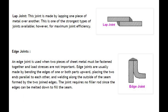Edge joints are usually made by bending the edges of one or both parts upward, placing the two ends parallel to each other, and welding along the outside of the seam formed by the two joined edges. The joint requires no filler rod since the edges can be melted down to fill the seam.